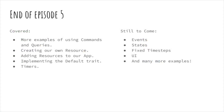That brings us to the end of episode 5. We've covered more examples of using commands and queries, creating our own resources, adding resources to our app, implementing the Default trait, and timers. Still to come are events, state, fixed time steps, UI, and many more examples. Thank you all very much for watching. Please post your comments below if you have any questions — I'm happy to hear all your feedback. Thanks again and see you in episode 6!